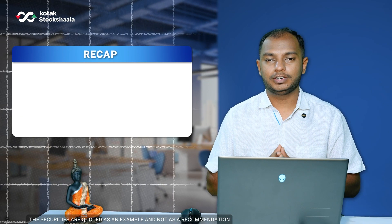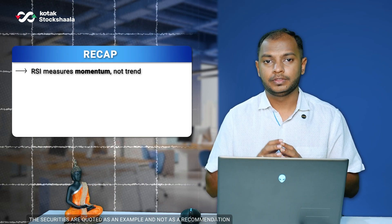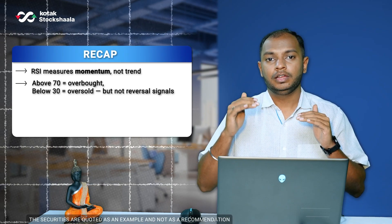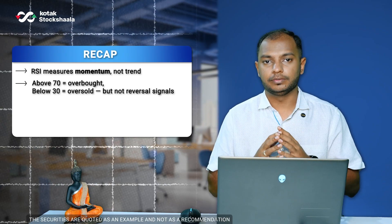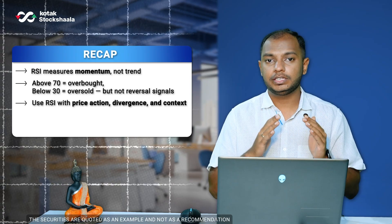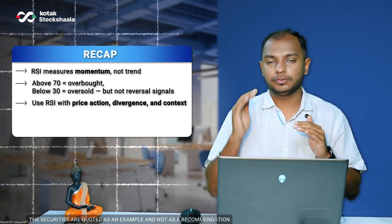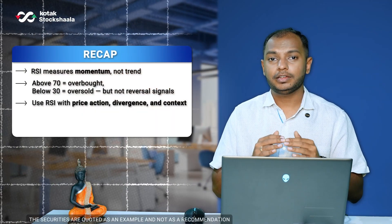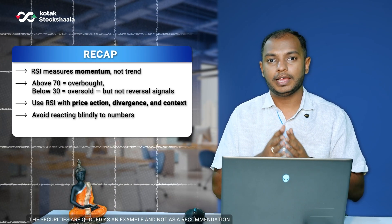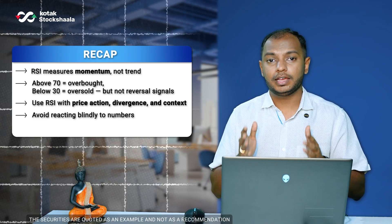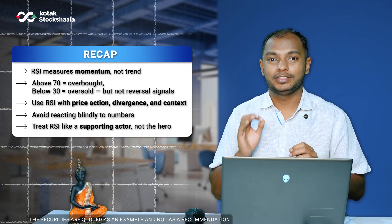Let's recap what we've learned. RSI is a momentum indicator, not a trend indicator. RSI above 70 indicates the overbought region, whereas RSI below 30 indicates the oversold region. RSI values range between 0 and 100. Being in overbought territory doesn't mean the market is going to reverse, and being oversold doesn't mean it will bounce back immediately — because these regions can last for a few days to a few weeks. Treat RSI as the supporting actor, not the hero.